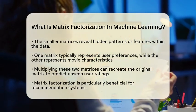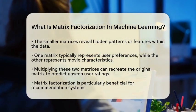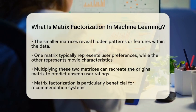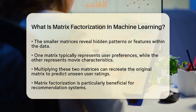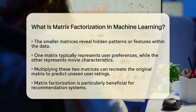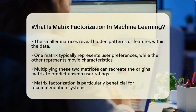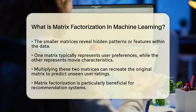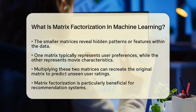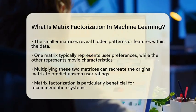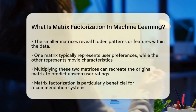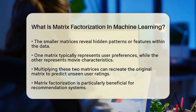This technique is particularly useful in recommendation systems. By identifying latent factors, which are not directly observed but influence the data, matrix factorization can uncover relationships between users and items. For instance,